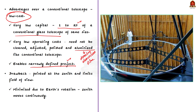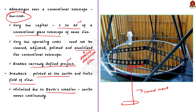Apart from these advantages, the liquid mirror telescope has a major drawback: it always has to look straight up at the zenith — that is, overhead — and cannot point at any direction or at different objects. This limits the telescope's field of view. However, this drawback is minimized because of Earth's rotation, which makes the zenith move continuously. So these are the basics about the liquid mirror telescope.